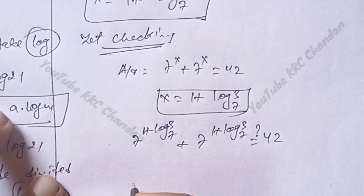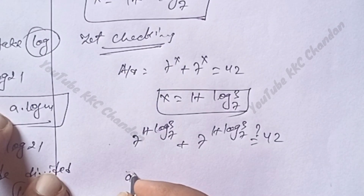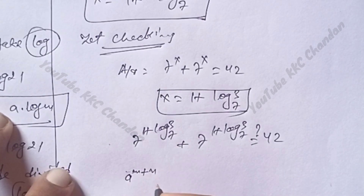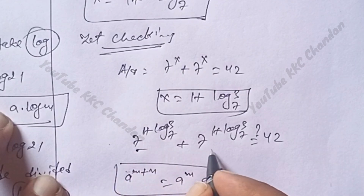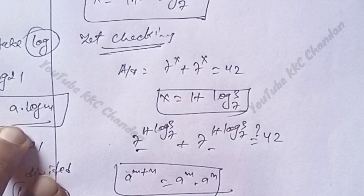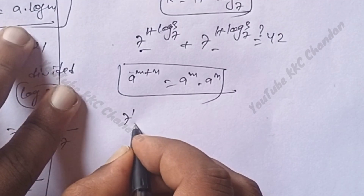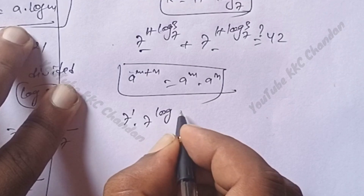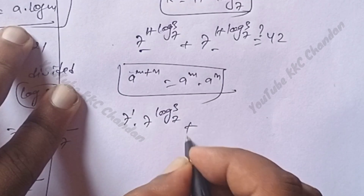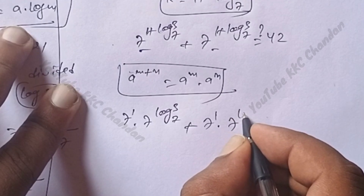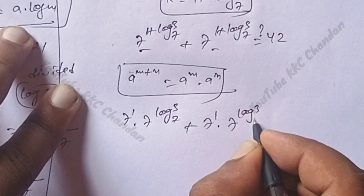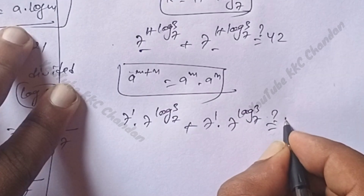We know that f power (m plus n) can be written as f power m into f power n. Applying this rule, each term becomes 7 power 1 into 7 power (log base 7 of 3). So we have 7 power 1 into 7 power (log base 7 of 3) plus 7 power 1 into 7 power (log base 7 of 3), which should equal 42.